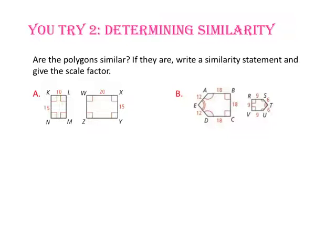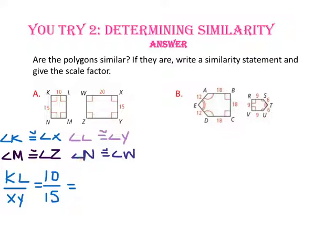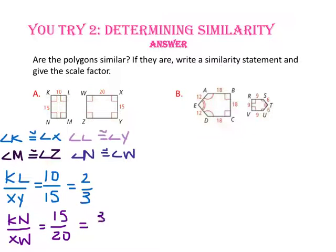Pause the video and do You Try number 2. Are the polygons similar? If they are, write a similarity statement and give the scale factor. Identifying congruent angle pairs: angle K is congruent to angle X, angle L to angle Y, angle M to angle Z, and angle N to angle W. Comparing ratios of corresponding sides: side KL to side XY gives 10 to 15, which simplifies to 2 to 3. Side KN to side XW gives 15 to 20, which simplifies to 3 to 4. Even though all corresponding angles are congruent, because the corresponding sides are not proportional, the two rectangles are not similar.